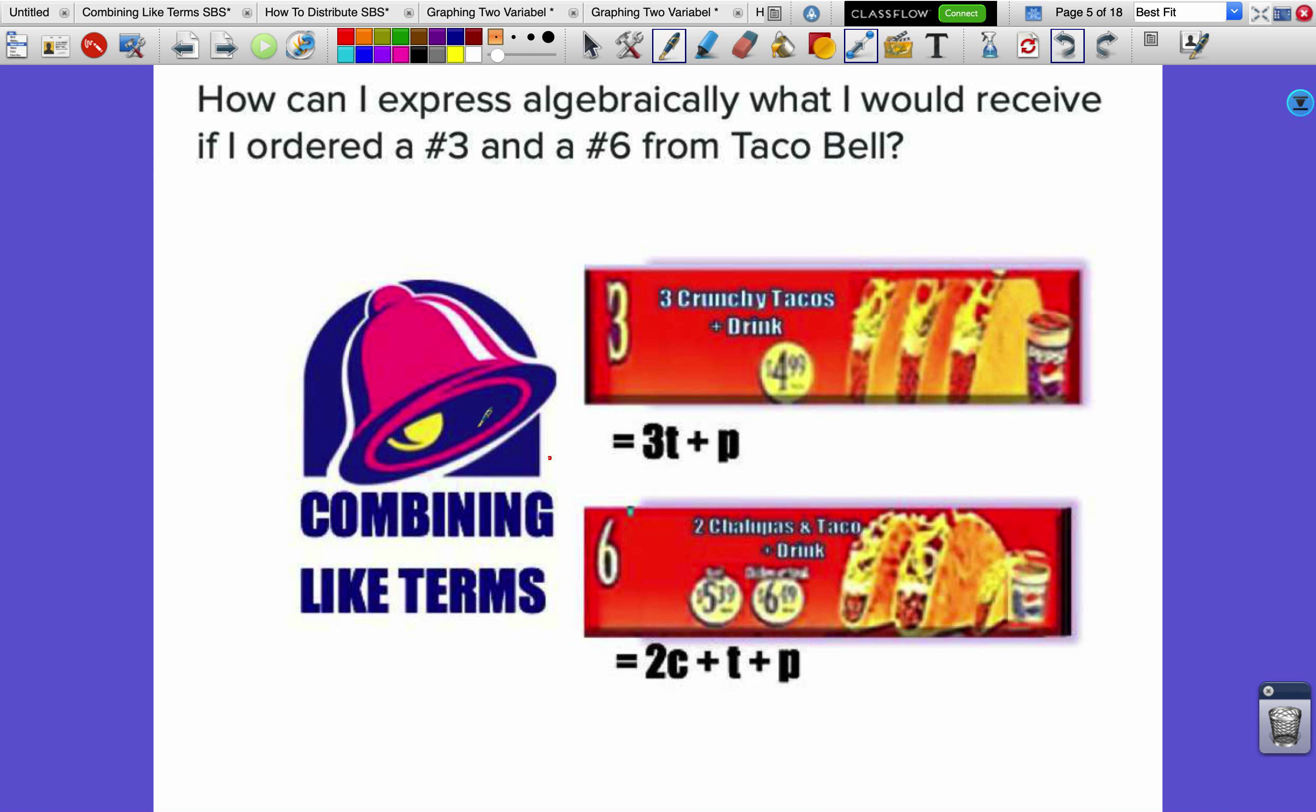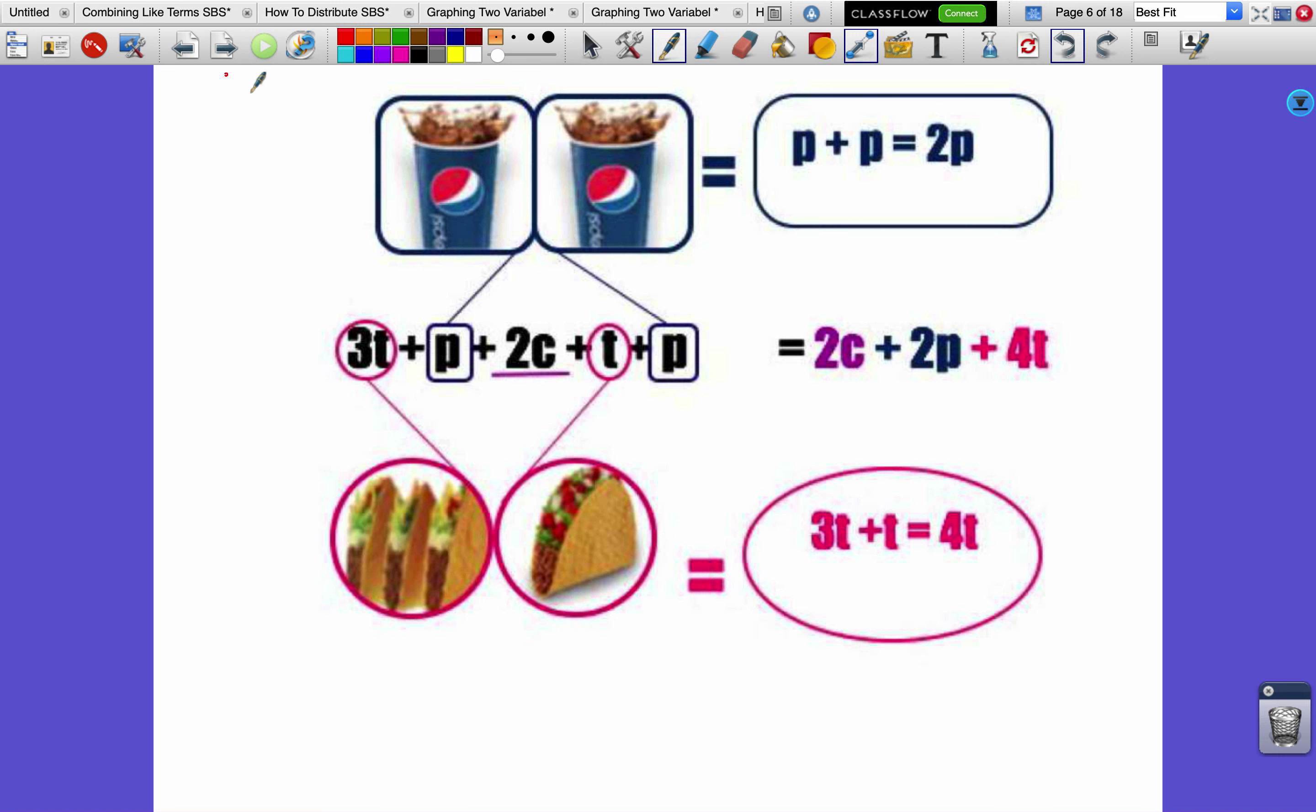What would I actually receive from Taco Bell? Well, one thing I'm doing is representing the order with variables. I don't have to write out taco, pepsi, chalupa - that's a lot of writing when I could say three tacos is 3t, a pepsi is just p, and a chalupa is just c.